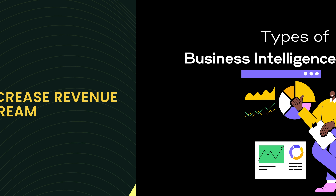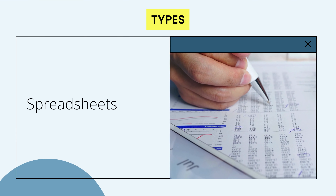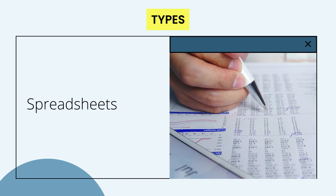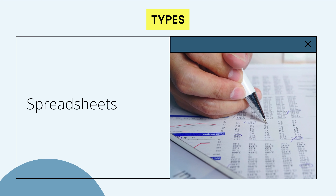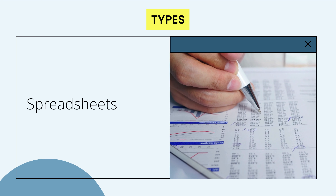Now, we shall discuss what are the different types of business intelligence software. Small businesses use spreadsheets to build data models through functions, pivot tables, and charts for data analysis.